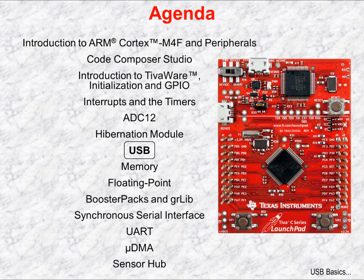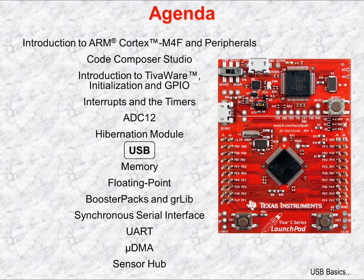The TM4C123GH6PM is equipped with a 12Mbps USB 2.0 compliant USB port. This USB port is capable of on-the-go, host, and device modes. In Chapter 6, you'll look at the basics of USB and how the USB port is implemented. Since we don't have an adapter cable, we'll limit ourselves to experimenting with the USB port as a device.